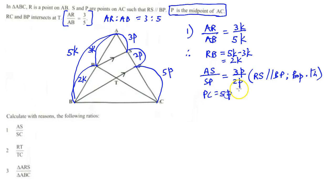We're almost there, but remember they told us that P is the midpoint, so PC is equal to 5p. We are given P is the midpoint of AC. Therefore, AS over SC is equal to AS is 3p and SC is 7p, which is equal to 3 over 7.